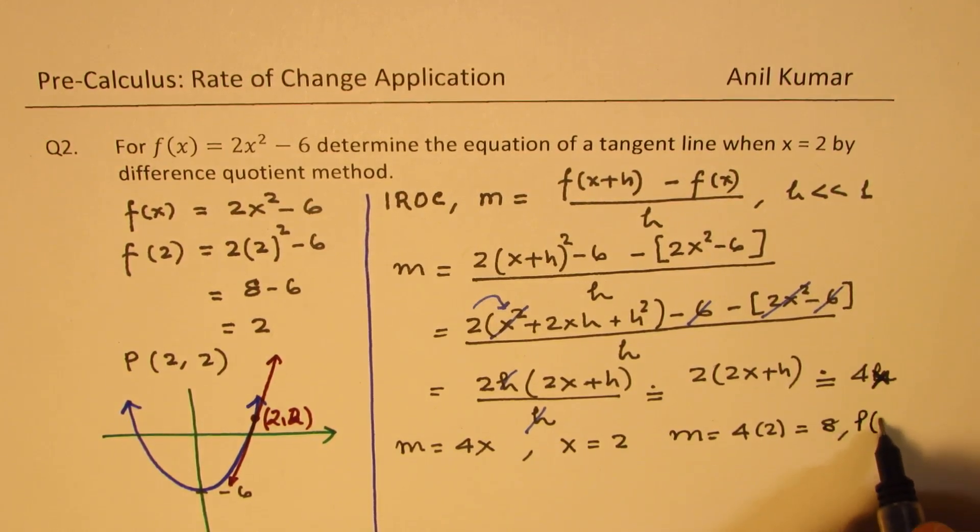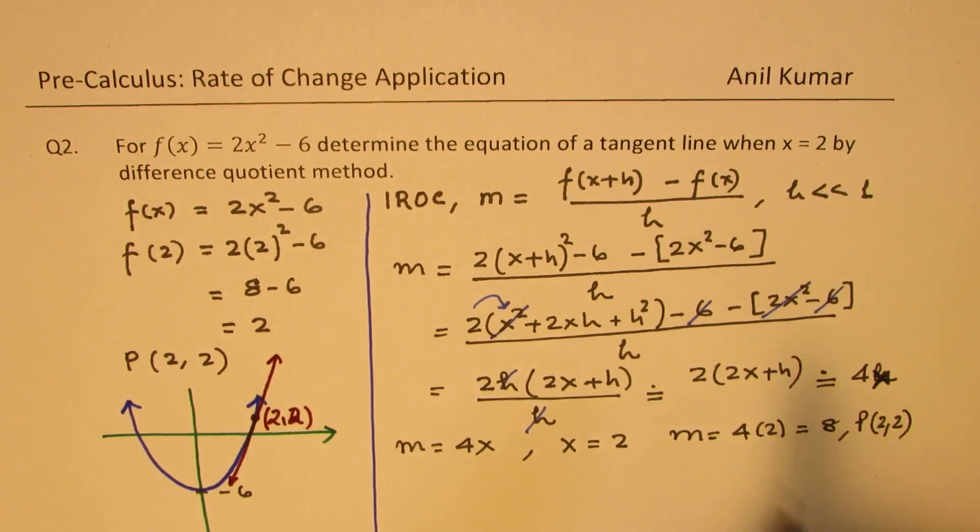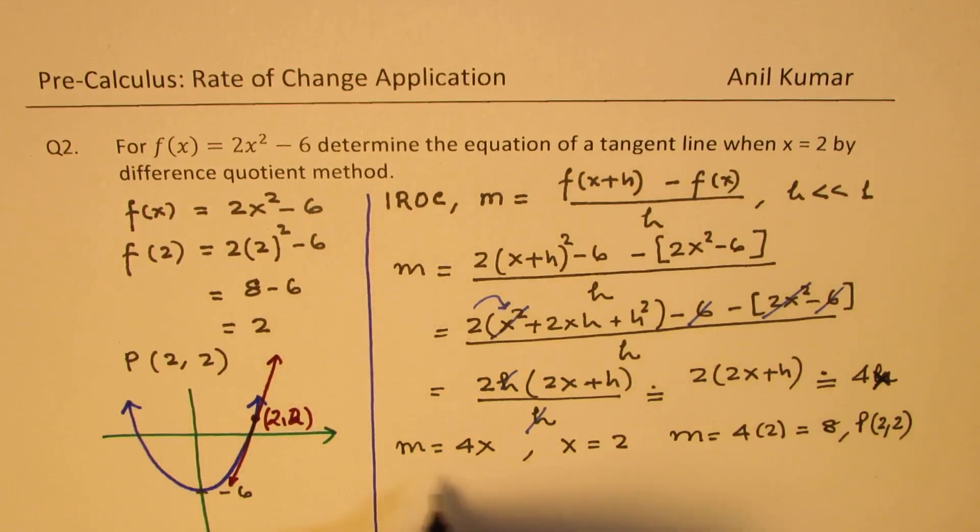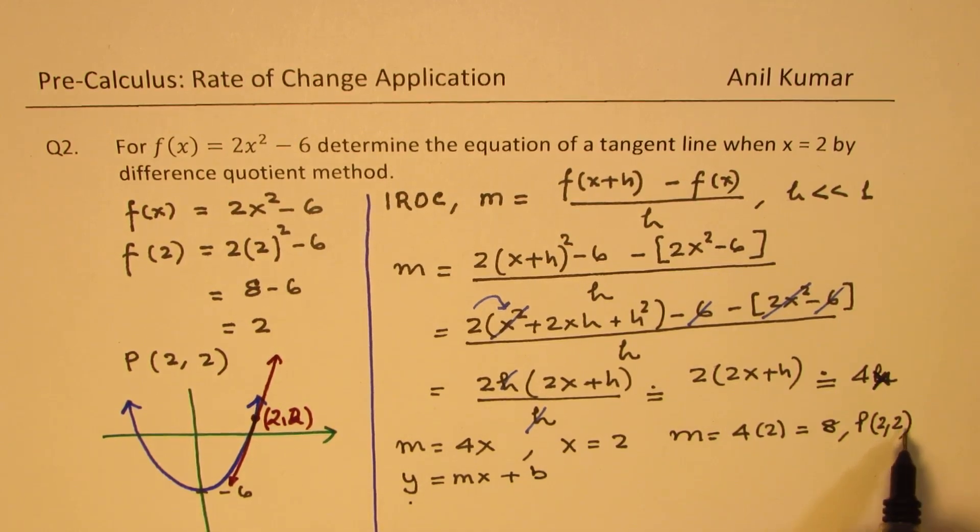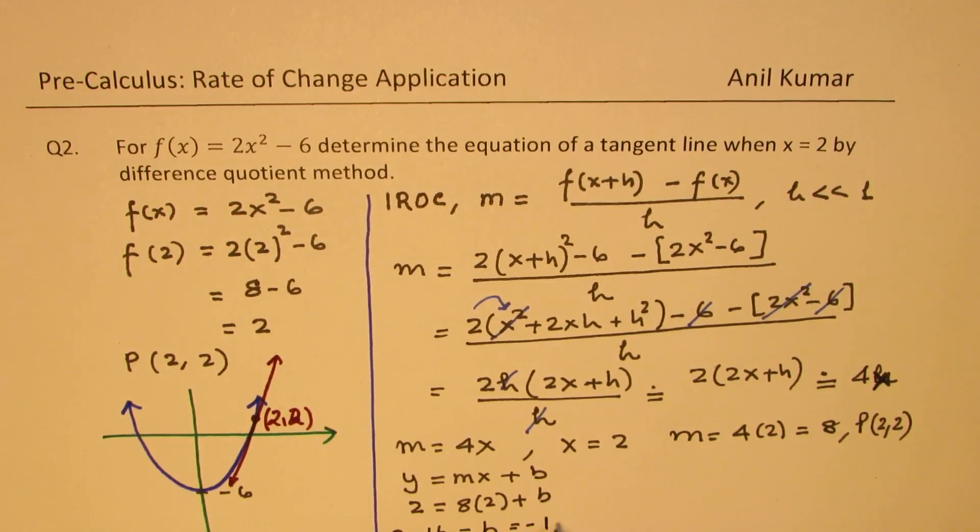And we also know that the point of interest is 2, 2. Now we can find the equation of the tangent line. So let the equation of the tangent line be y = mx + b. So in this case, we know y is 2, slope m is 8, x is also 2, and we can find what b is. So we get 2 - 16 equals b, which is minus 14.